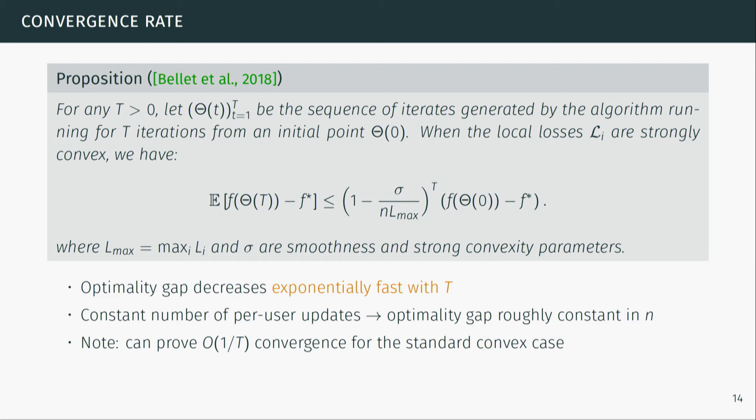We can show this algorithm optimizes our objective and prove a convergence rate. For strongly convex local losses, after t device activations the expected optimality gap shrinks by a constant factor at each iteration — decreasing exponentially fast. Importantly, if you set the number of updates per user to a constant independent of n, you get roughly a constant optimality gap. This means you can grow the number of devices arbitrarily large while keeping per-device updates constant — devices don't need to do more work as the network grows.